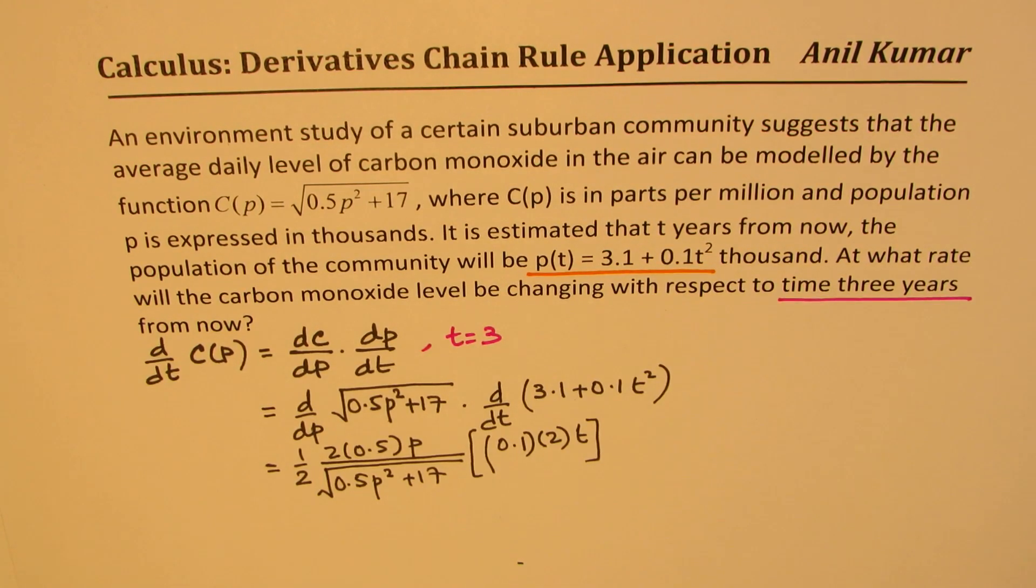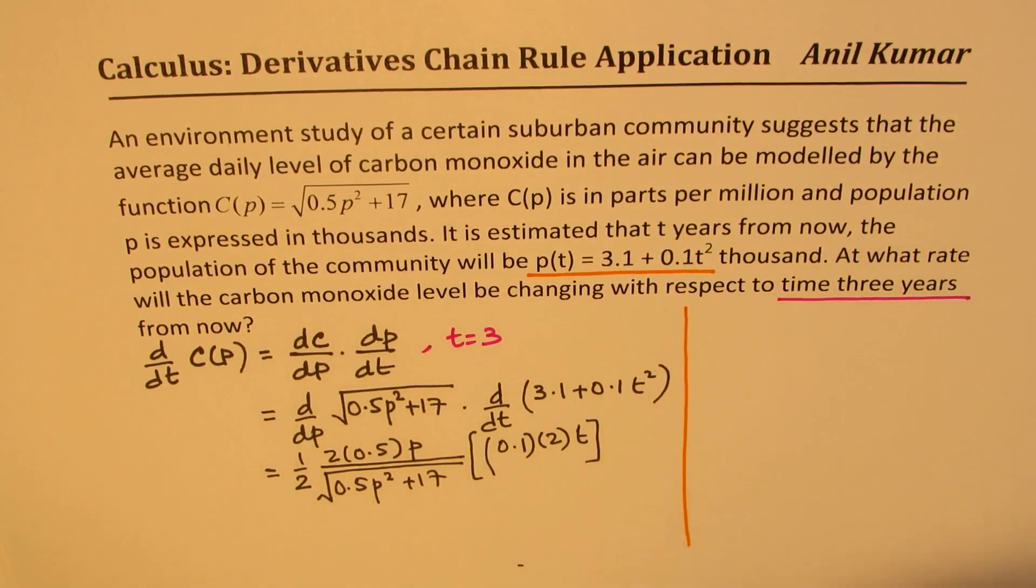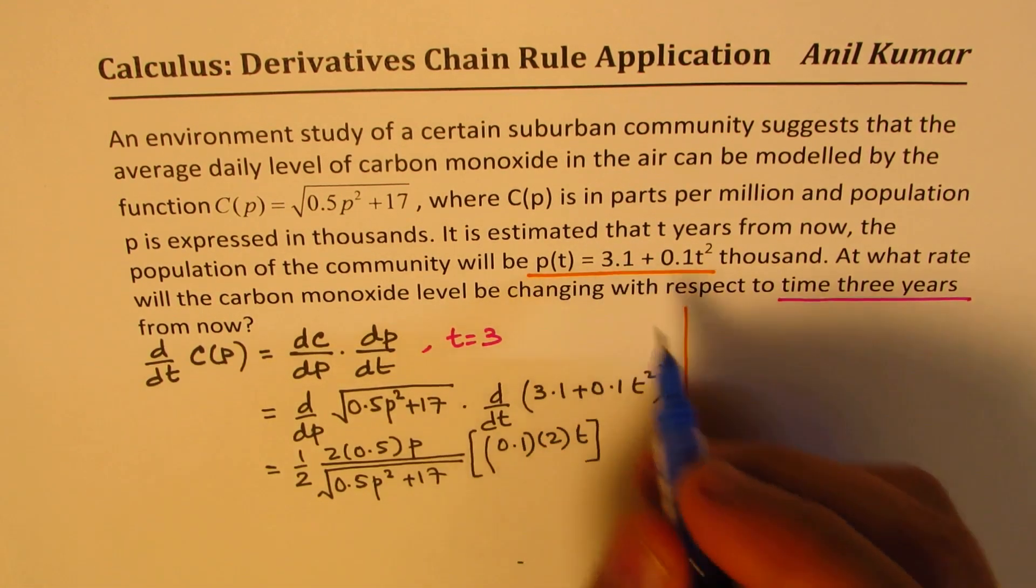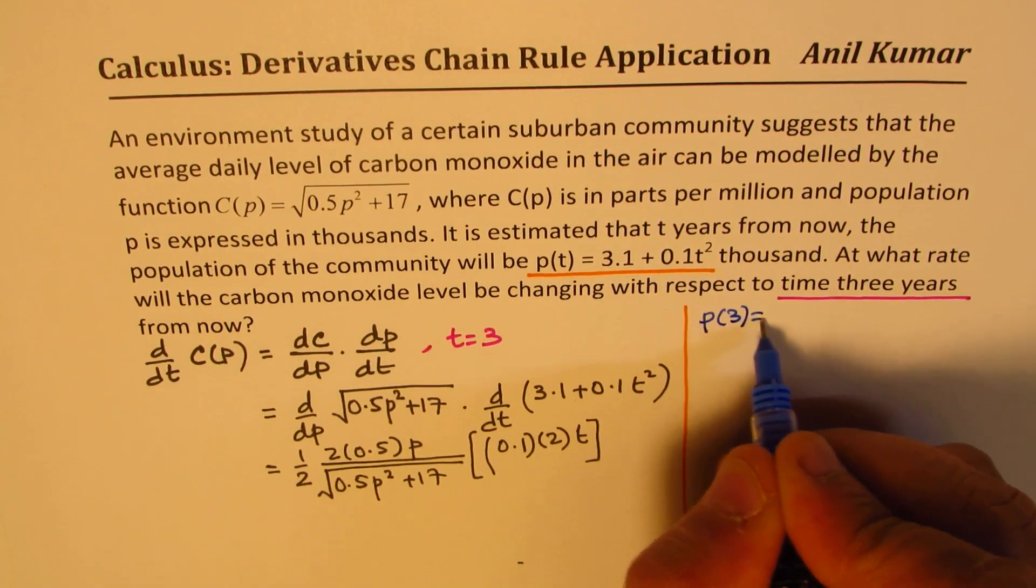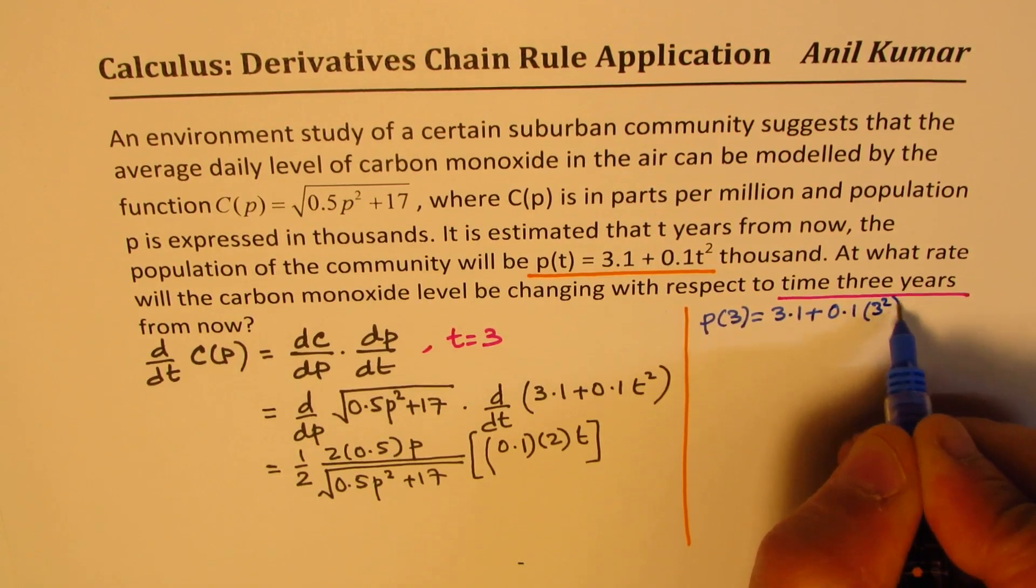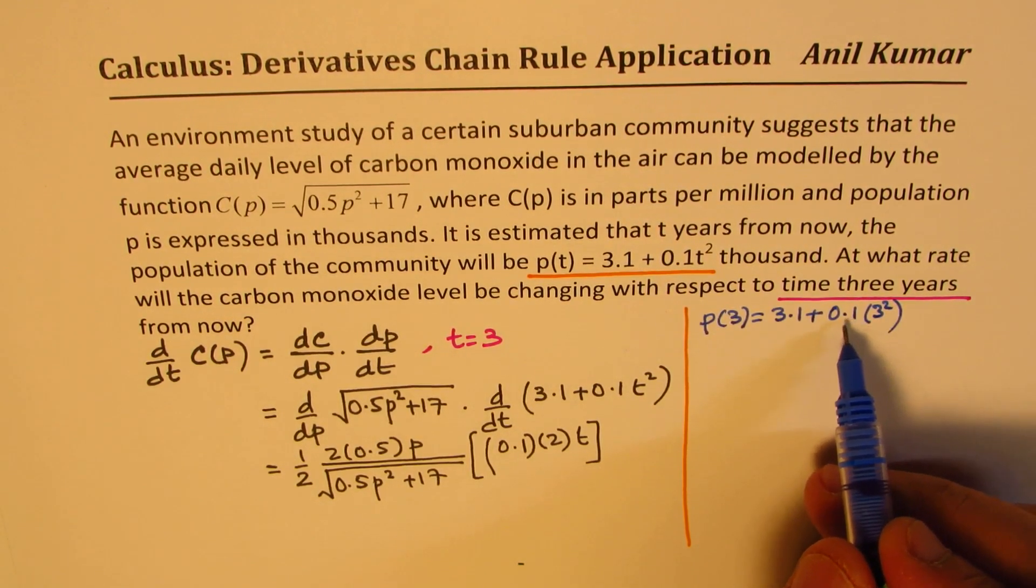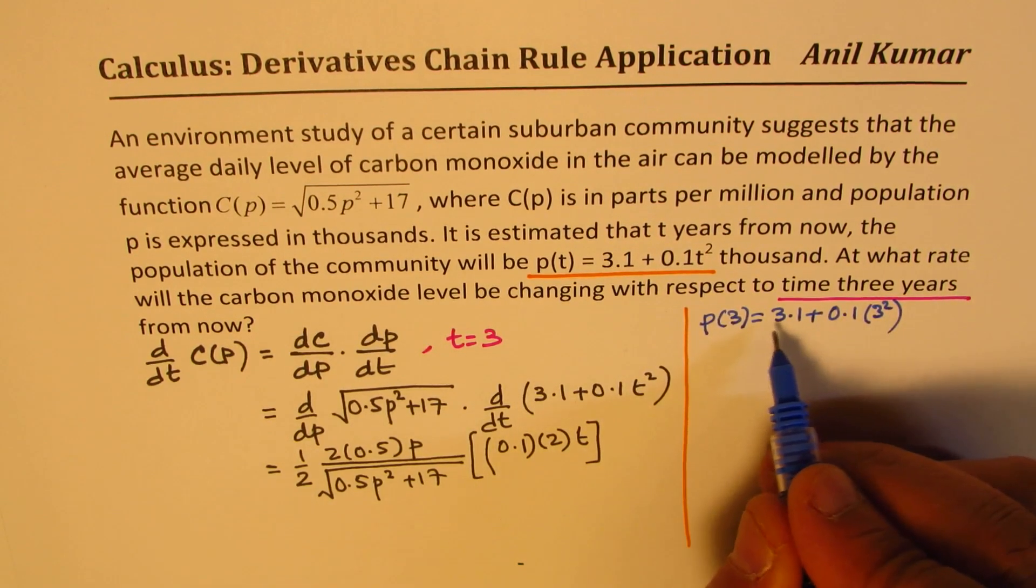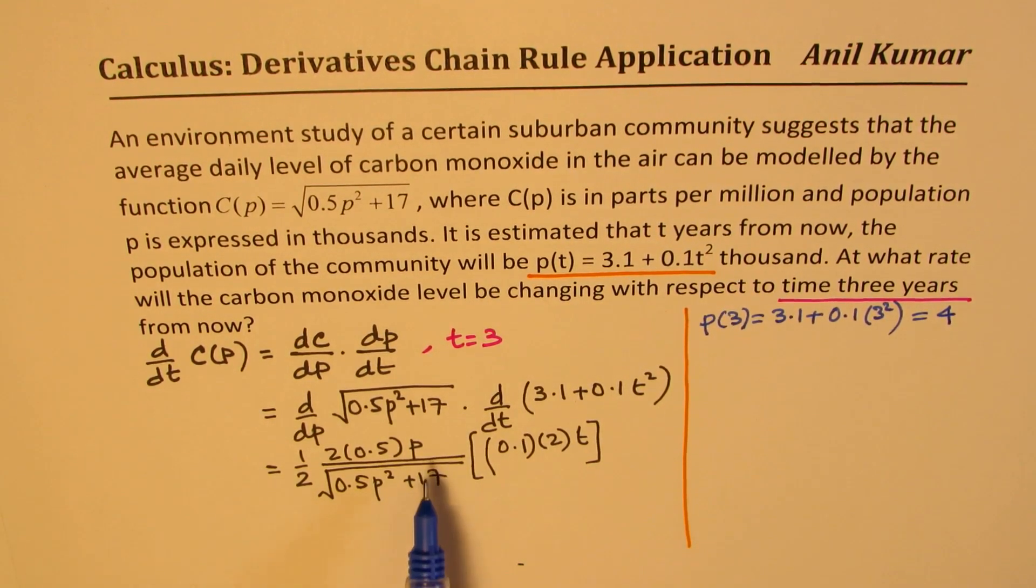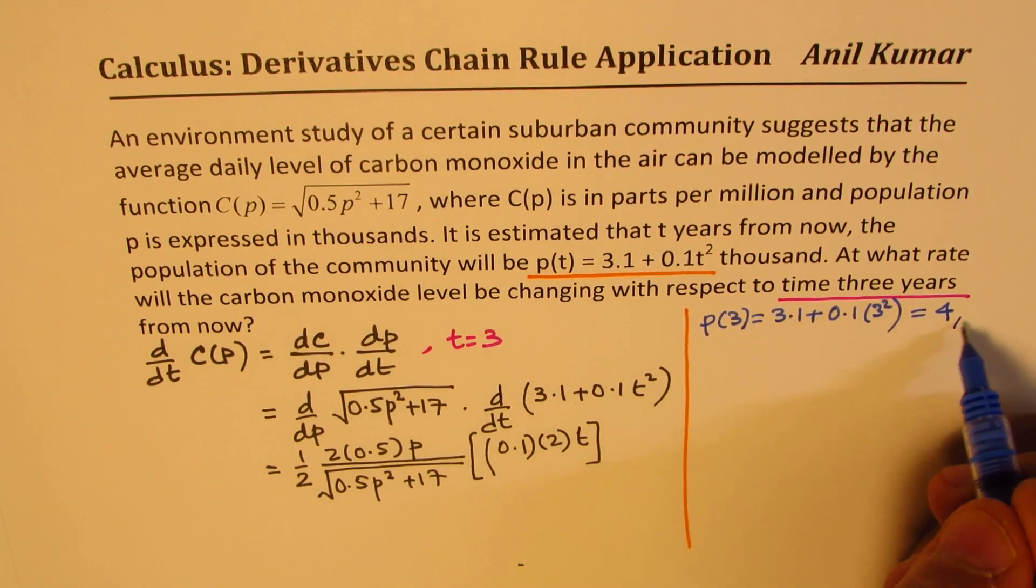Now we need to substitute the values and figure out the answer. So what are the values we are looking for? One is that if t = 3, what is p(3)? p(3) = 3.1 + 0.1 × 3². So that is 0.9 plus 3.1 gives us a value of 4. So p(3) is 4. So we know what this p is at 3. Time t is 3 for us.